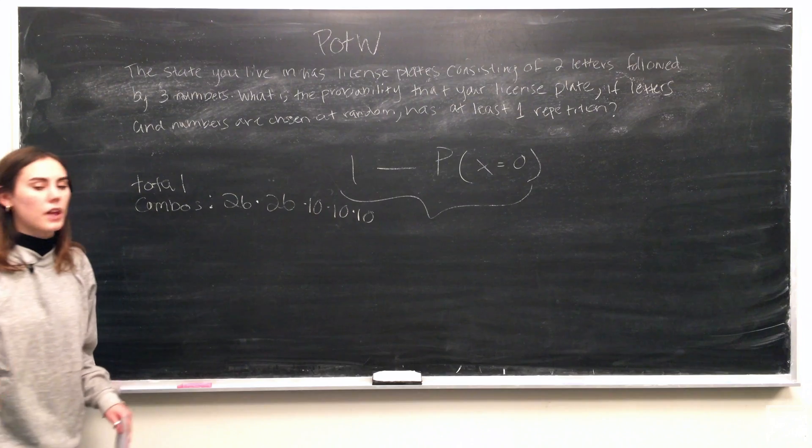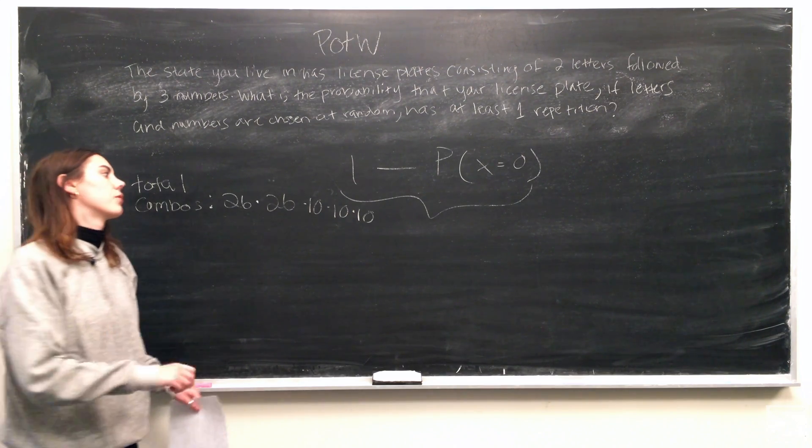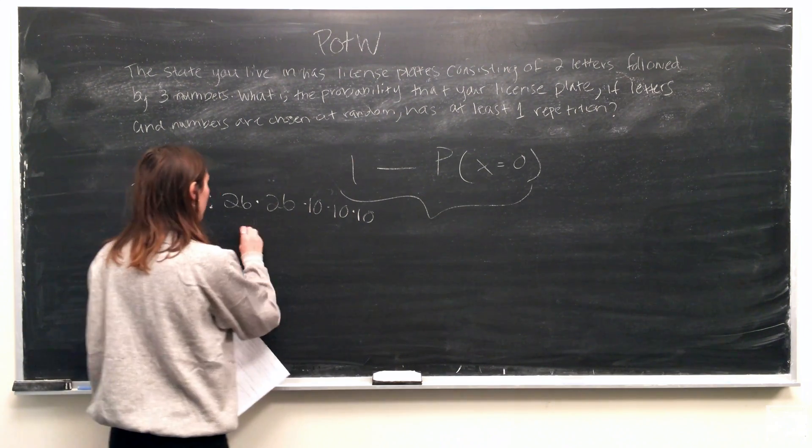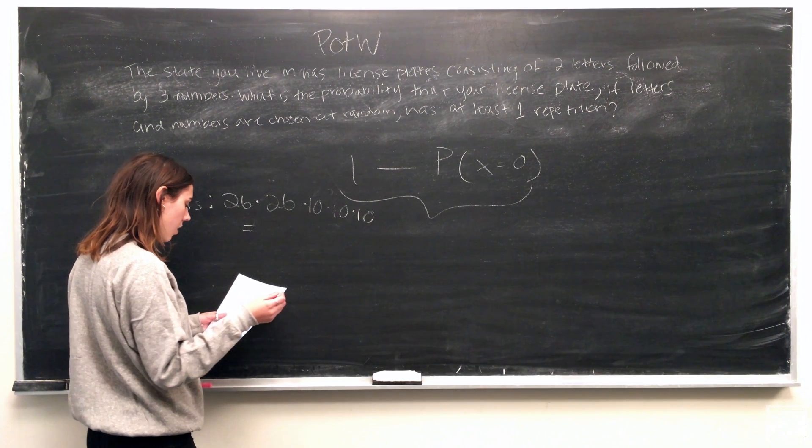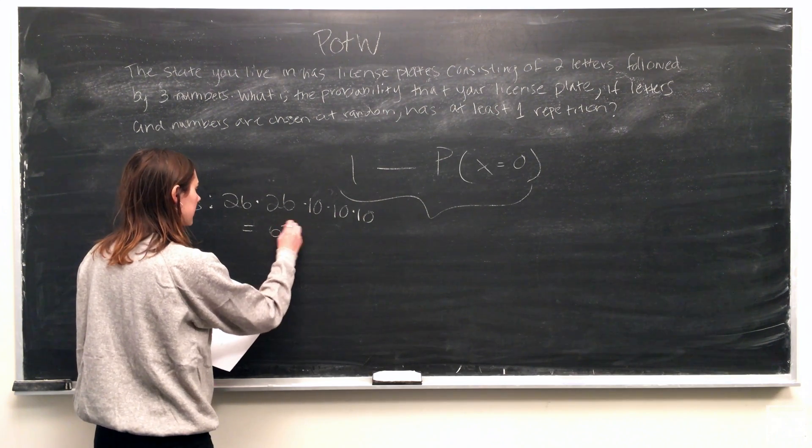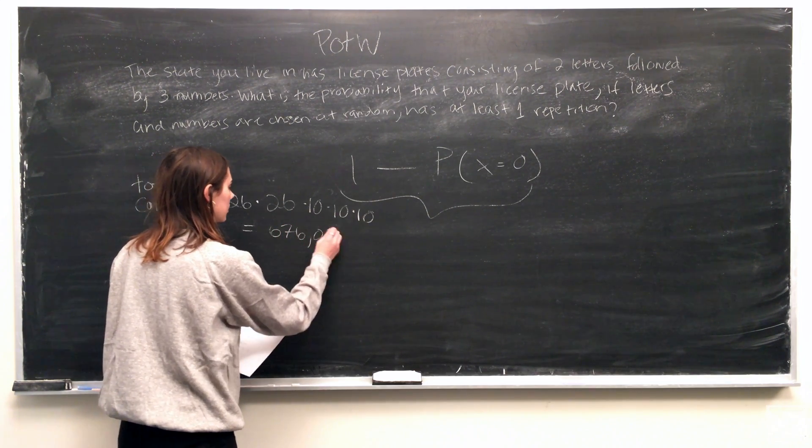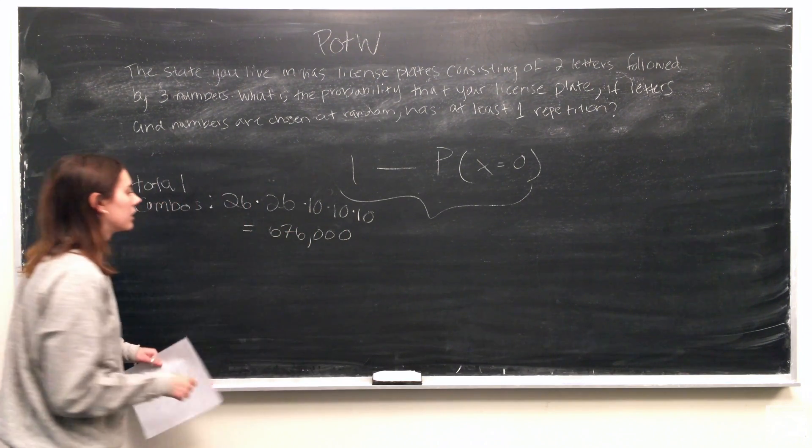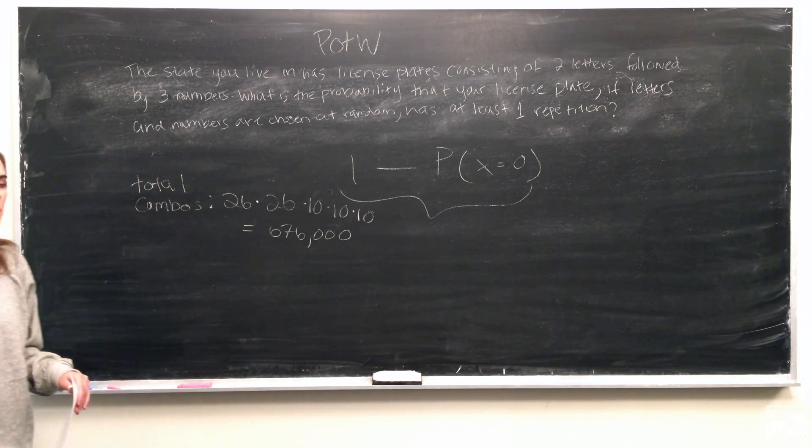And then for the second number, another 10 choices including repetitions, and for the third, another 10 choices. So what that comes to in total is 676,000.